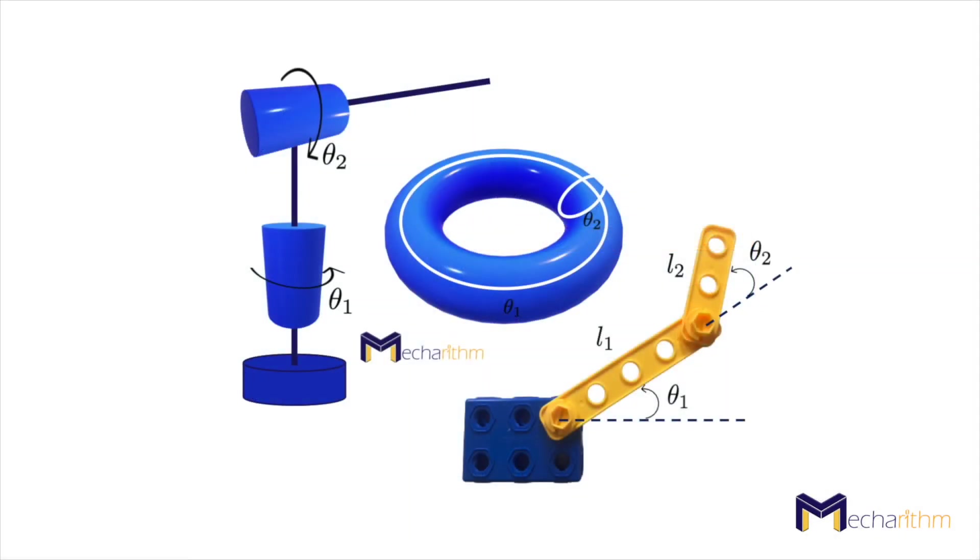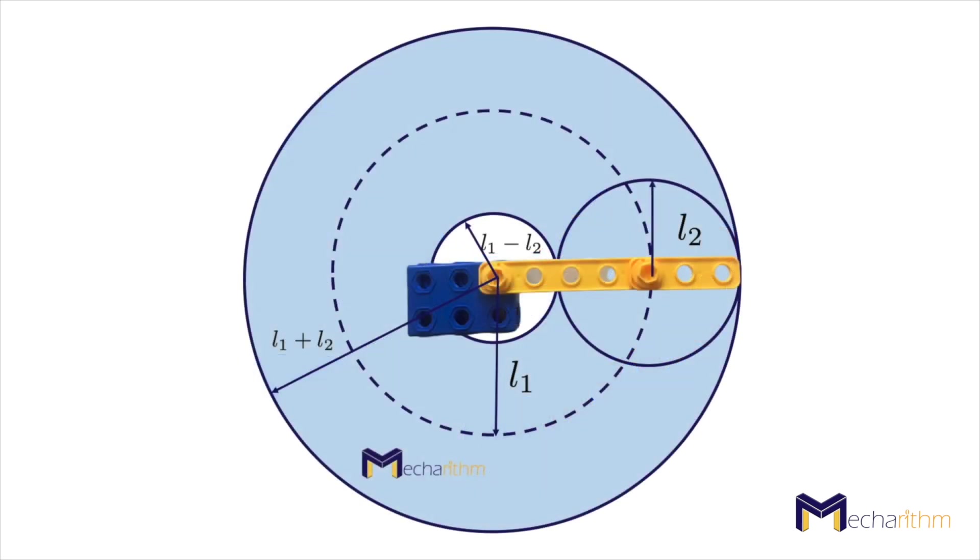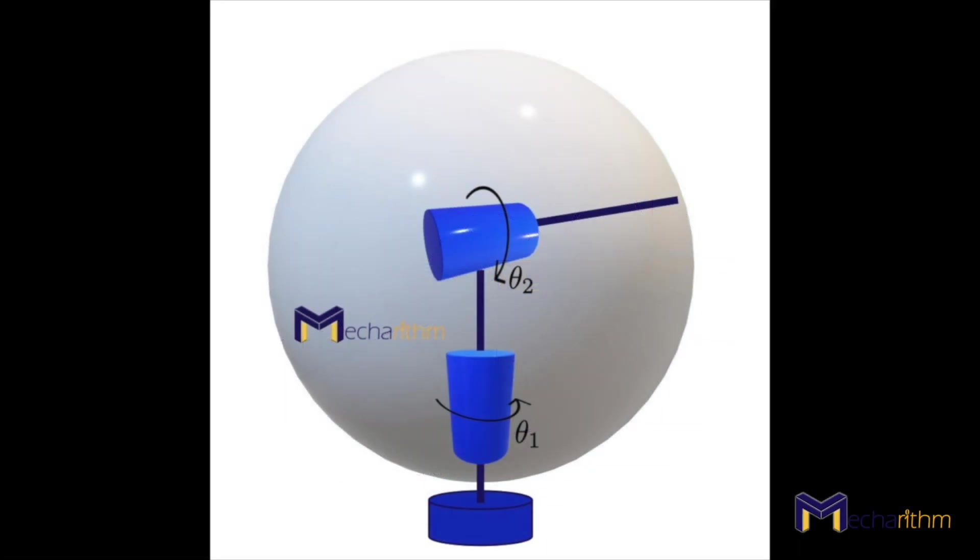Two mechanisms with the same C spaces can have different workspaces. For example, the configuration space of a 2R planar open chain robot and a 2R open chain spherical robot is the 2D surface of a torus as we saw in the previous lessons. But the workspace of a planar 2R open chain robot is a planar disk, as we saw before, and the workspace of a spherical 2R open chain robot is the surface of a sphere.